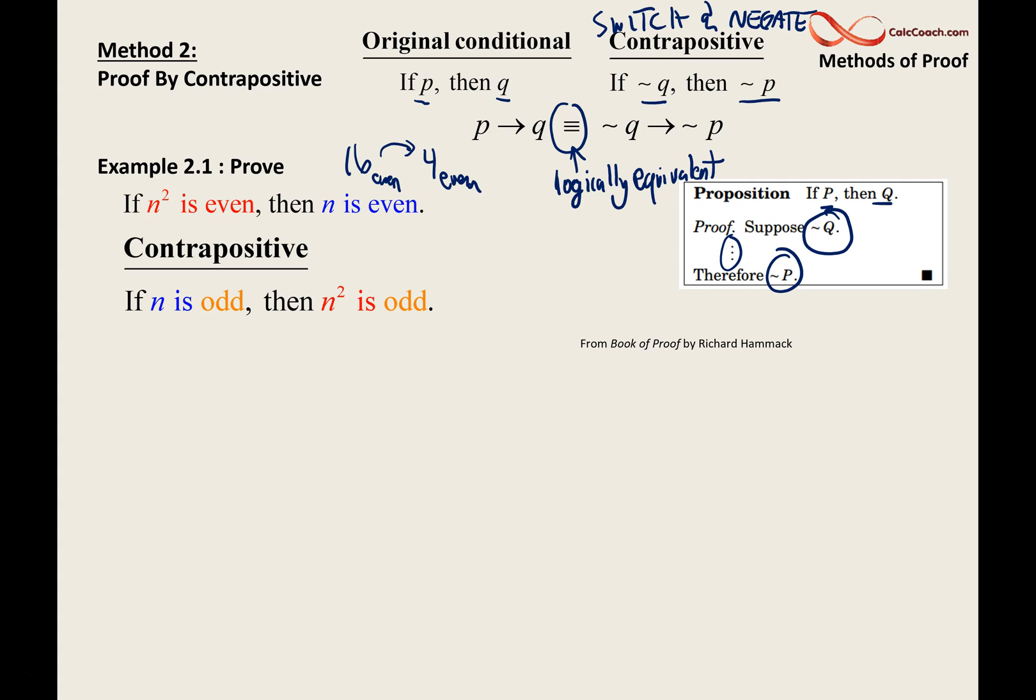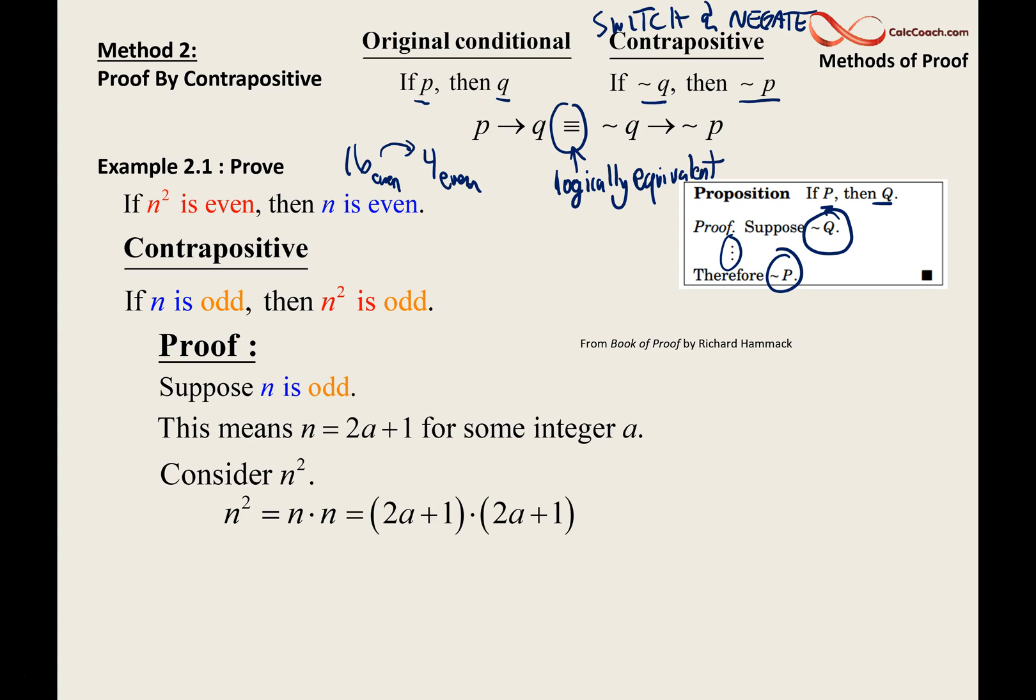It would be very much like the proof we did in the last video where we have a direct proof on this contrapositive. We start with the statement that n is odd. What does that mean by definition? It means that n can be written as twice an integer plus one. You want me to look at n squared? Okay, fine. I'll take n times n. That's what n squared means. So I'll take 2a plus one times 2a plus one.